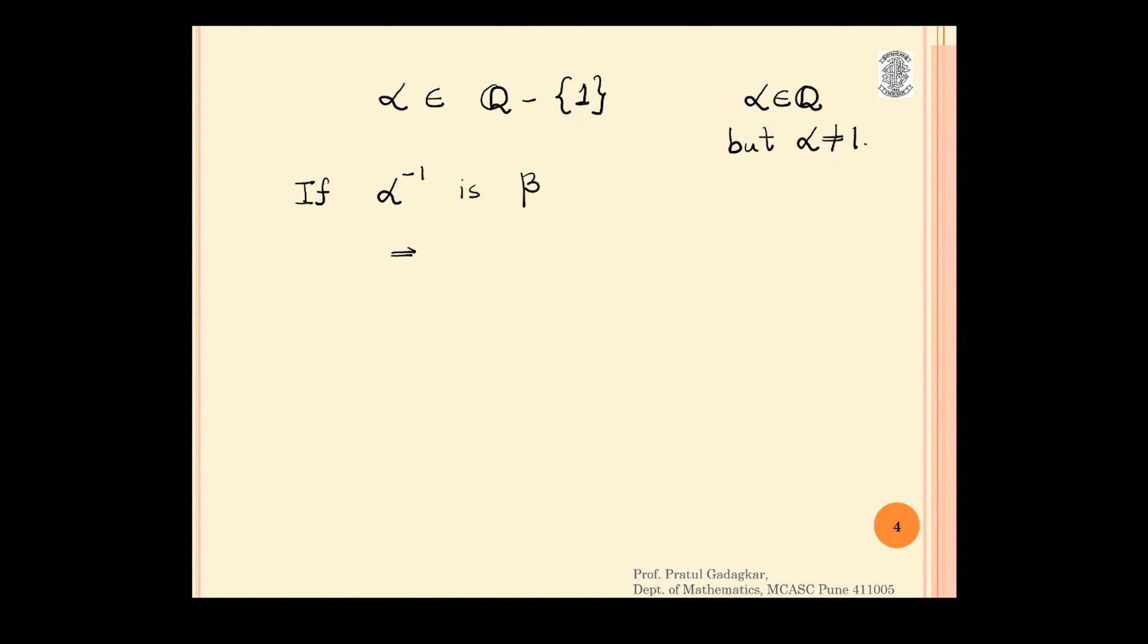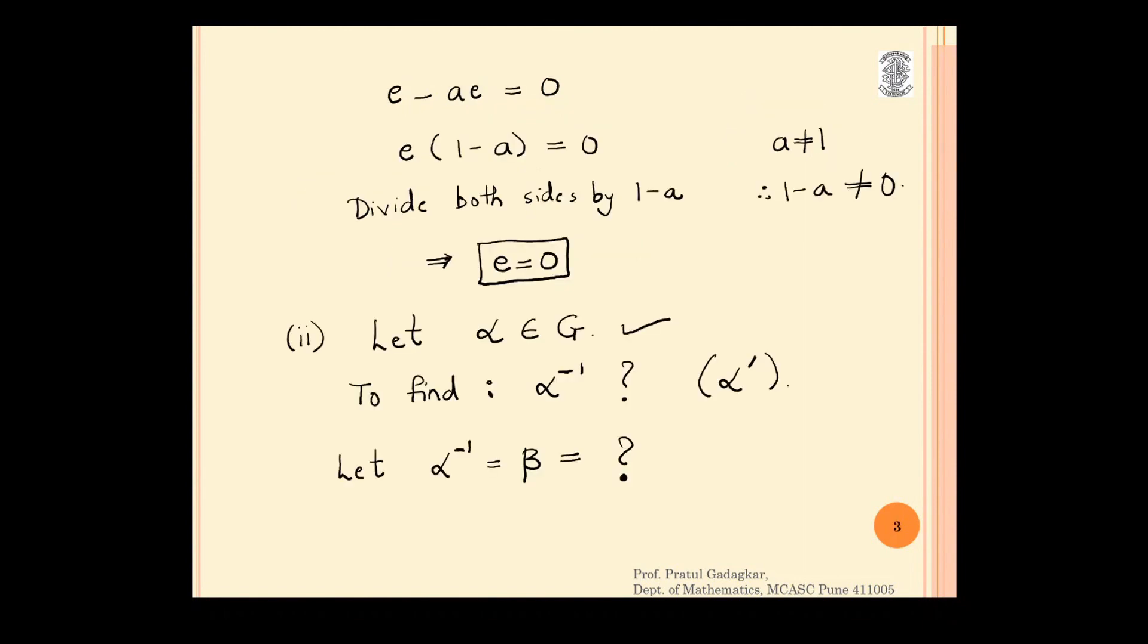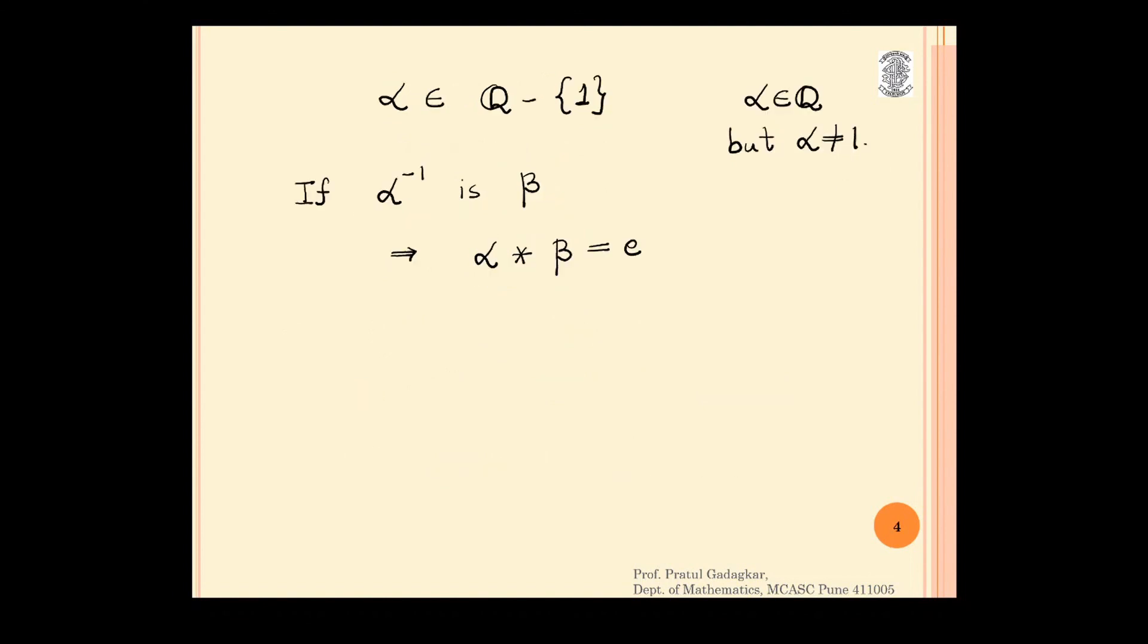If alpha inverse is beta, this means that alpha multiplied by beta must give you identity. But we know in the previous sheet we have seen that the identity is 0. This means that alpha star beta which is equal to alpha plus beta minus alpha beta is equal to identity is 0. This means that we want to find beta. I will keep beta alone. Now I will write beta into 1 minus alpha is equal to minus alpha. This means that beta is equal to minus alpha upon 1 minus alpha.